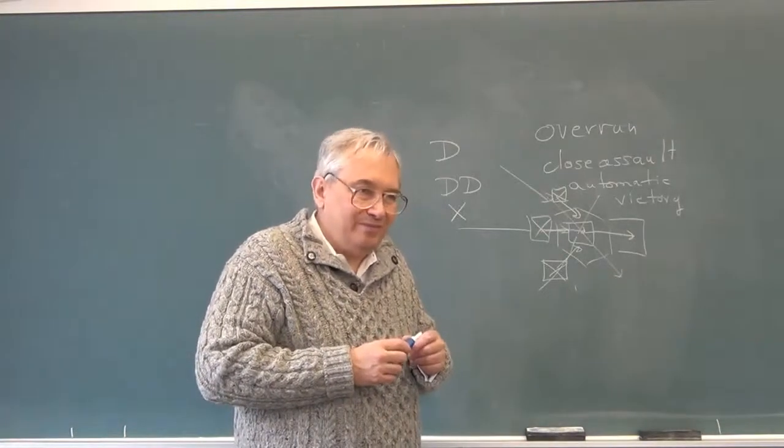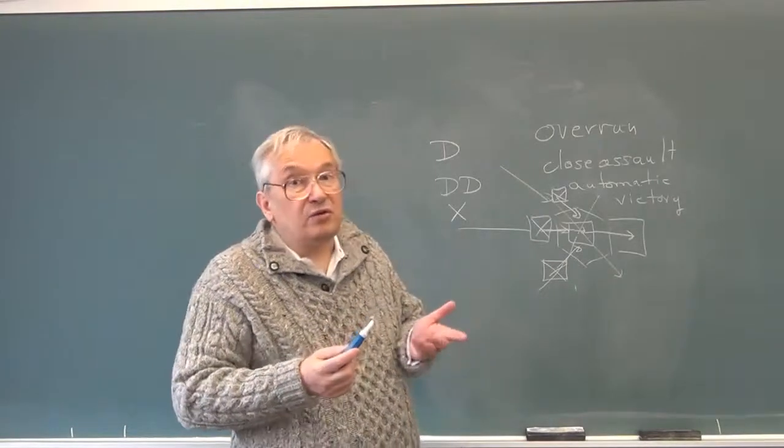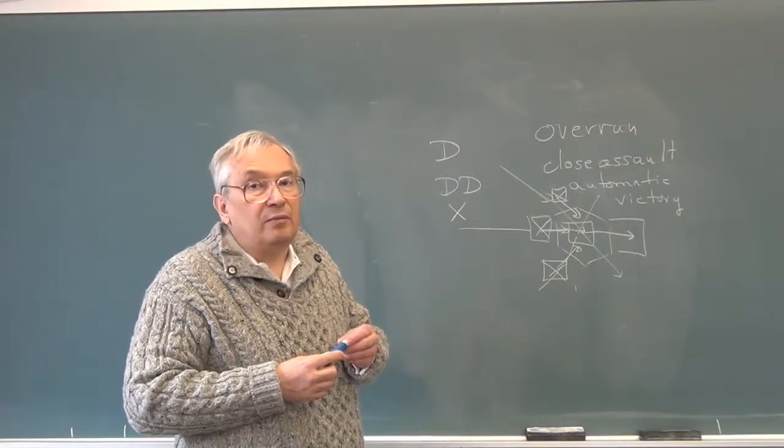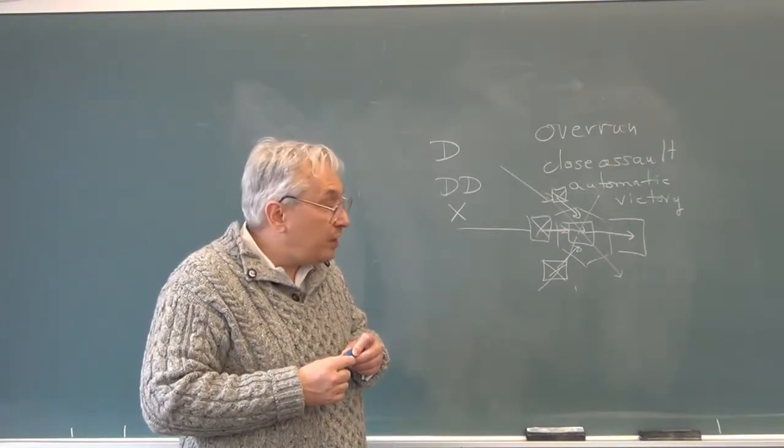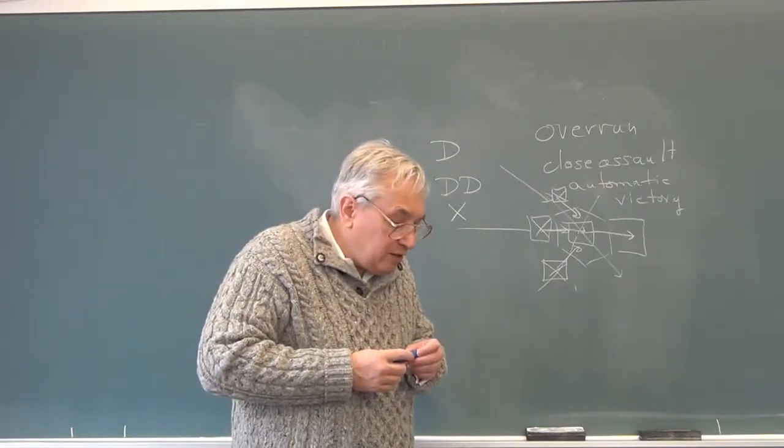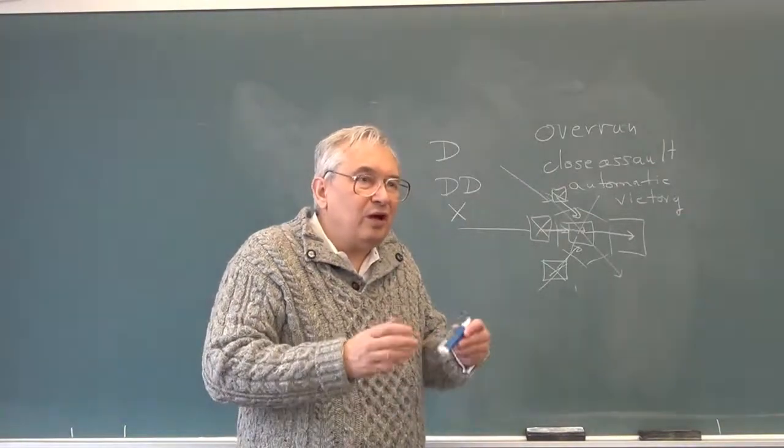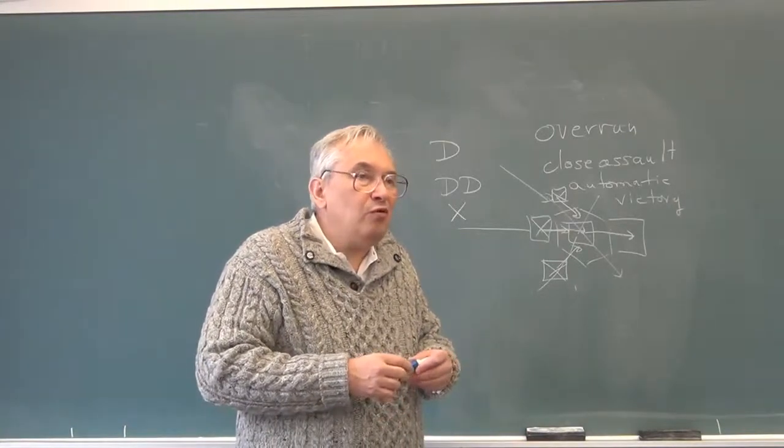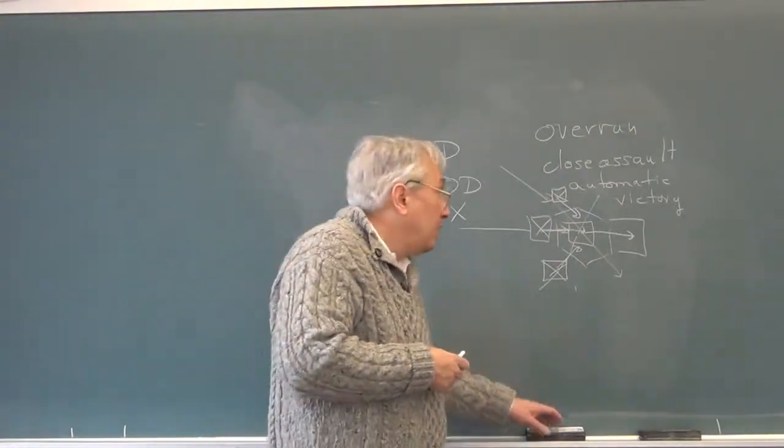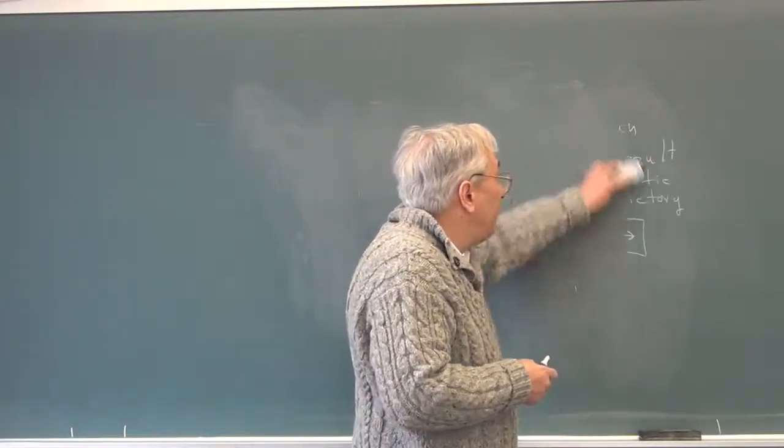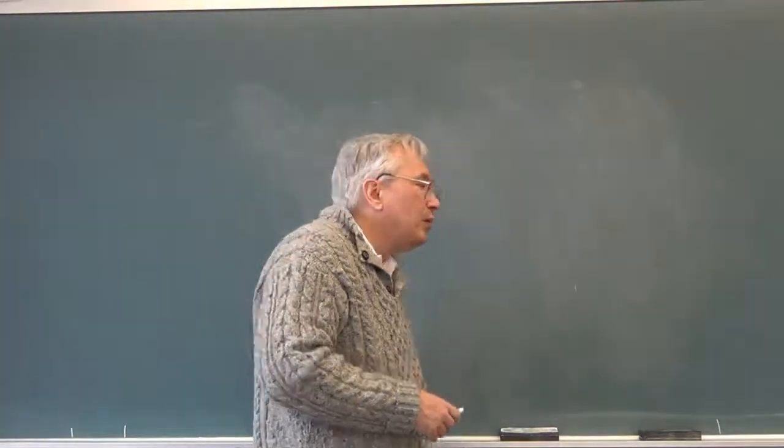Close assault has the interesting rule that you cannot execute a close assault after using road movement because you'd be in column as opposed to the formation you'd need, and since the turns are only six minutes long, actually getting something a platoon from road march into position to attack in only six minutes is pretty good even if it's well trained. So how do we do this? Well we remember to insert a rule: if you are marching along a road you do not have to use road movement. Road movement is one half of a movement point per square, regular movement is one.